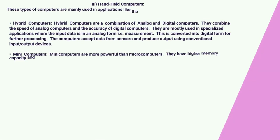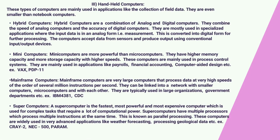Handheld computers. These types of computers are mainly used in applications like the collection of field data. They are even smaller than notebook computers. Hybrid computers are a combination of analog and digital computers. They combine the speed of analog computers and the accuracy of digital computers. They are mostly used in specialized applications where the input data is in an analog form — i.e., measurement — which is then converted into digital form for further processing.